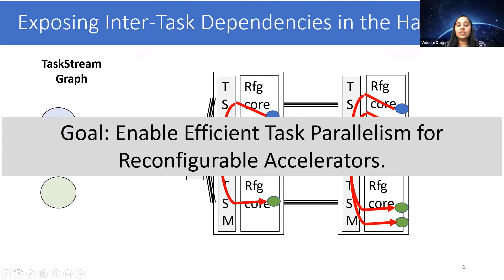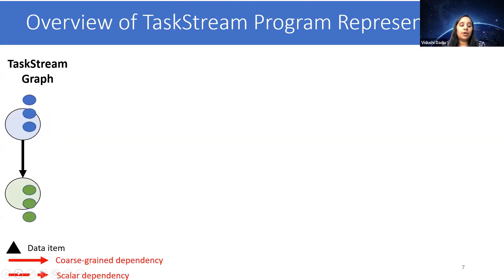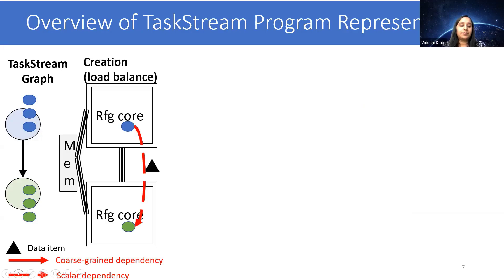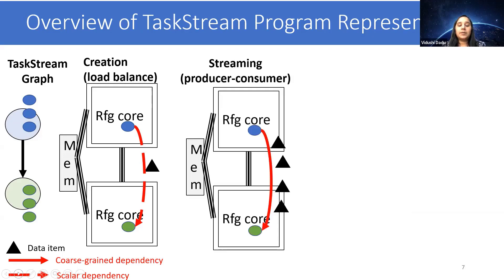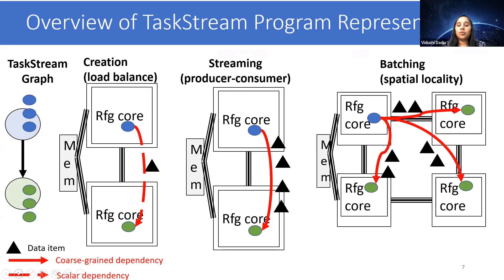Our goal is to enable efficient task parallelism for reconfigurable accelerators. We developed a novel representation of programs called TaskStream to enable load balance and locality optimizations. For load balance, we have a creation edge where the child task is created by the parent and scheduled for balanced load. In the presence of producer-consumer relationships, the parent and child tasks are scheduled together, and the data is streamed through them. In the presence of coarse-grained data reuse, the tasks may be dynamically batched, and the data may be multicast to them.